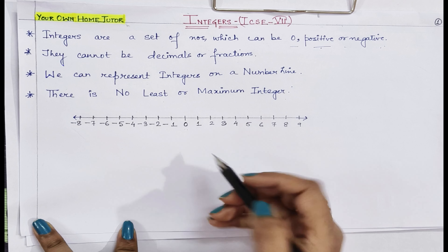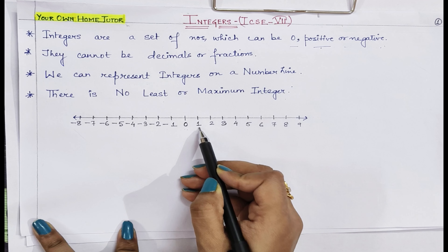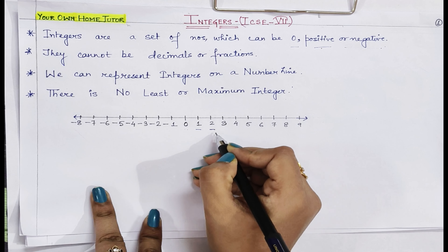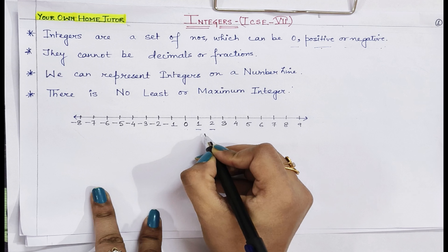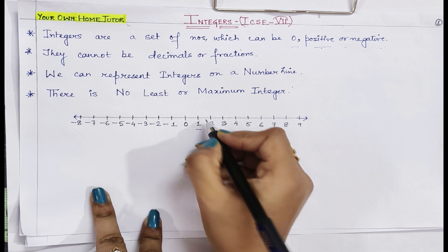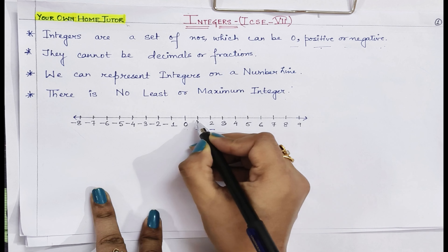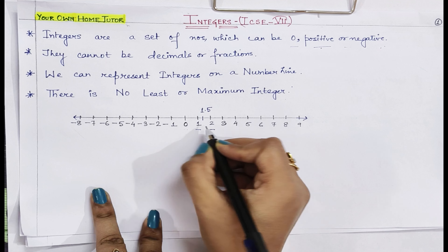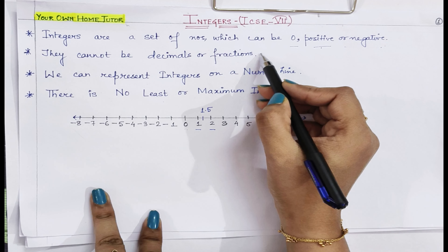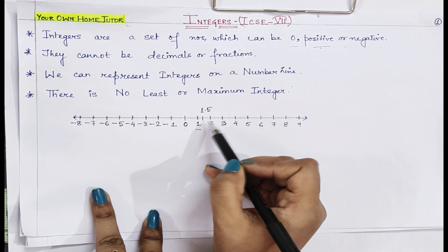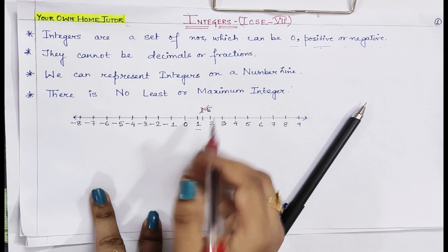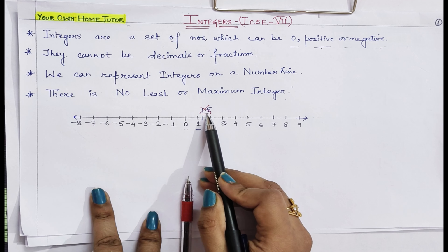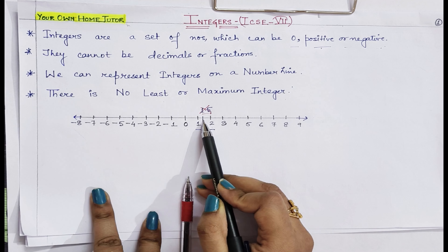Now let us see the concept of no integer lying between two consecutive integers. If you see here, 1 and 2 are two such integers which come one after the other — that is why we call them consecutive integers. There is no number or integer lying between 1 and 2. You might ask why can't we take 1.5 lying between these two? Because decimals or fractions cannot be called integers. So between two consecutive integers, no third integer can lie.